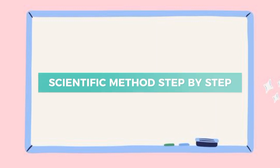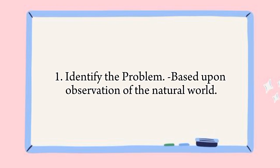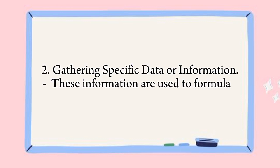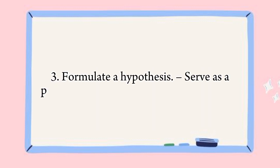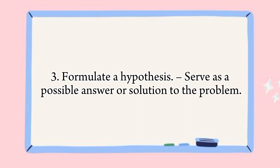The scientific method is a step-by-step process that scientists use to understand the world around us. The steps are: First, identify the problem — identify a problem or question based on observations of the natural world. For example, a scientist might observe that plants grow towards light and wonder why. Second, gather data — scientists gather specific data or information about the problem, such as measuring how much light different plants receive and how fast they grow. Third, formulate a hypothesis — a possible answer or solution to the problem. For example, based on their data, scientists might hypothesize that light helps plants grow.